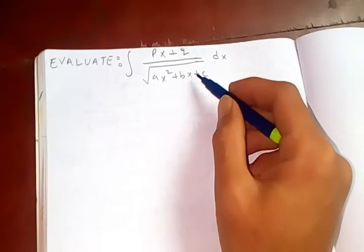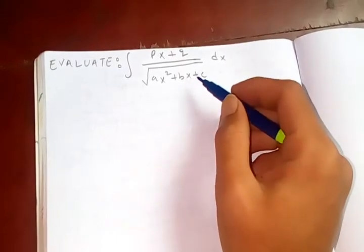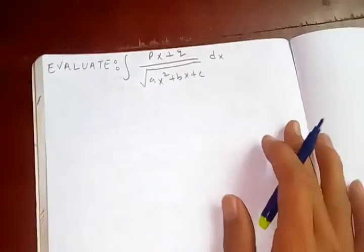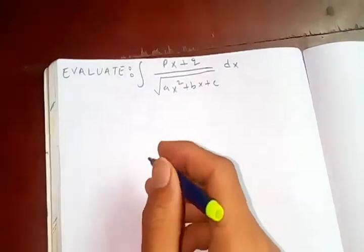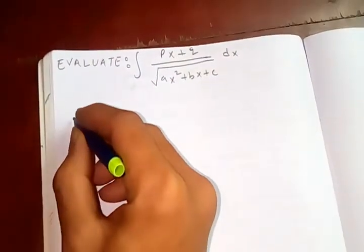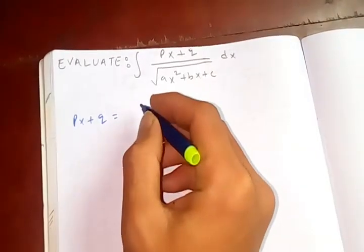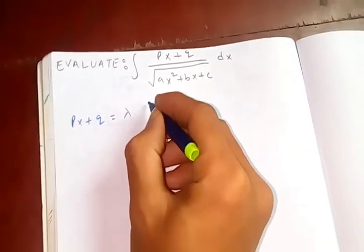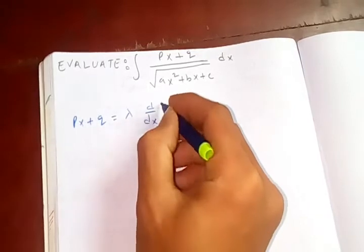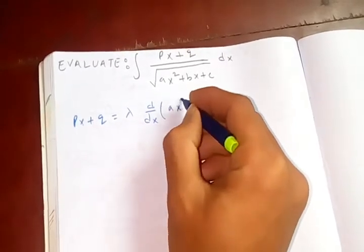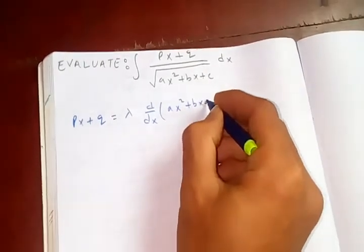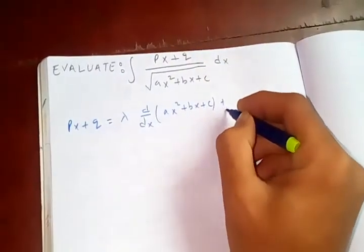you have to keep in mind that we are going to take a constant term, just like we did before. So, px plus q equal to lambda times differentiation of the denominator plus mu.